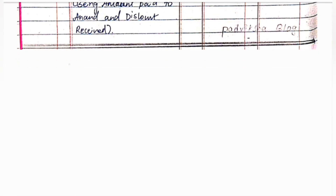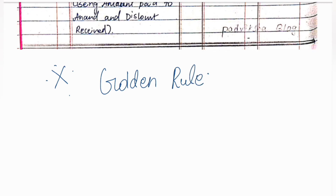The first journal entry is very important — which is the golden rule. The golden rules are very important. When we studied in school time, now we are going to college, a little bit better. So if you are going to college, for every journal entry you can tell the golden rule.